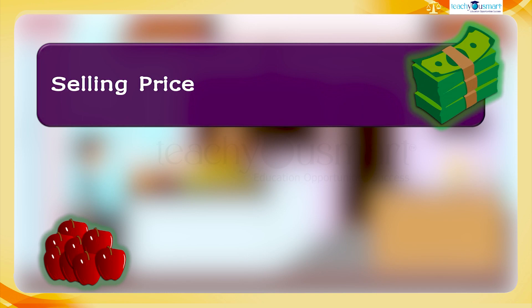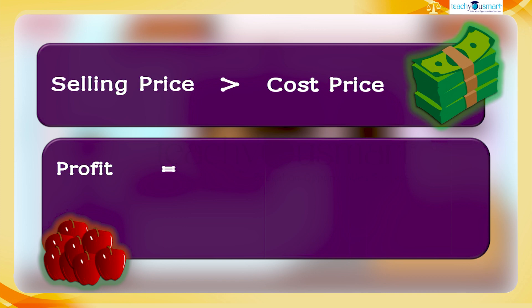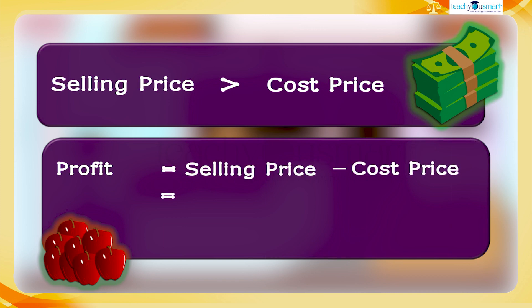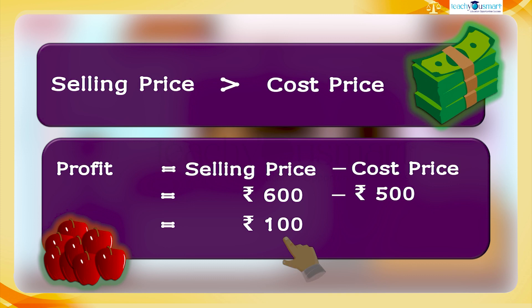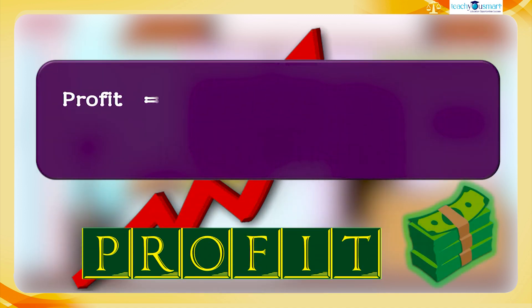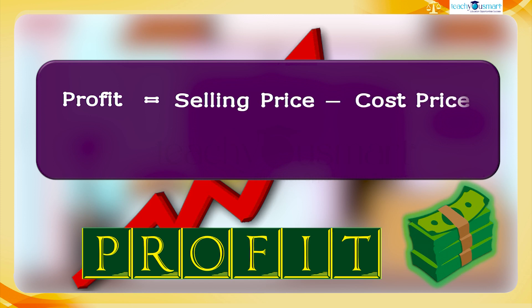Here the selling price is more than the cost price. Therefore, profit equals selling price minus cost price, which equals rupees 600 minus rupees 500, equals rupees 100. Therefore the shopkeeper got a profit of rupees 100. So for finding profit: profit equals selling price minus cost price.